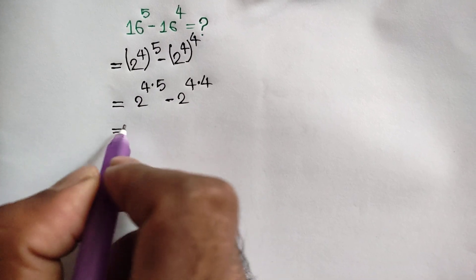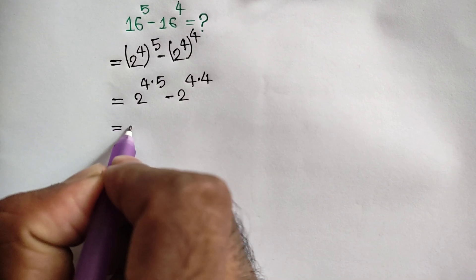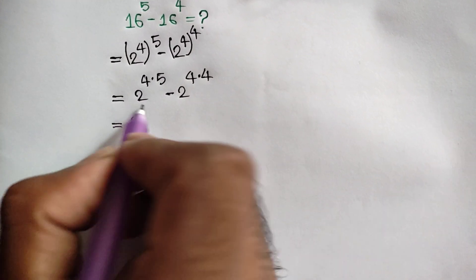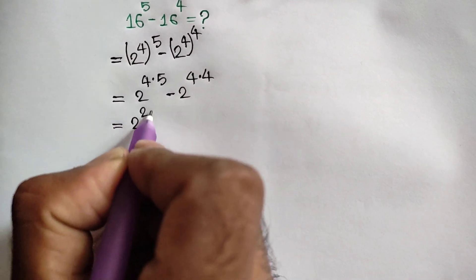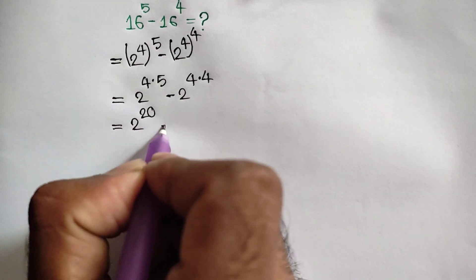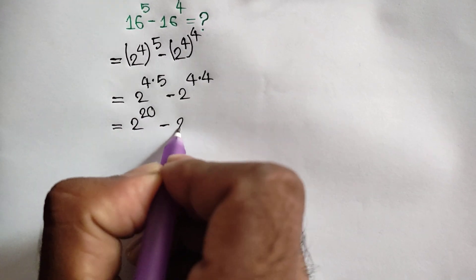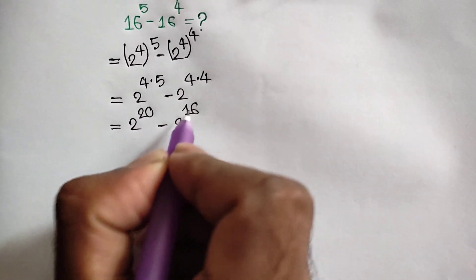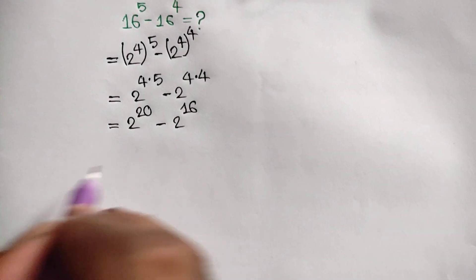That means 2 to the power 20 minus 2 to the power 4 times 4, that means 2 to the power 16.